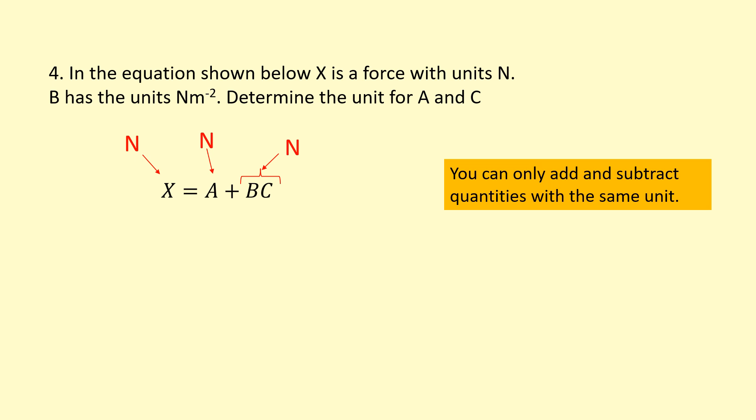Because we're adding A and B times C, they'll have to have the same unit. For example, you can't add newtons and mass, kilograms, or you can't add joules and time. Those are two different things. You can't add them or subtract them.